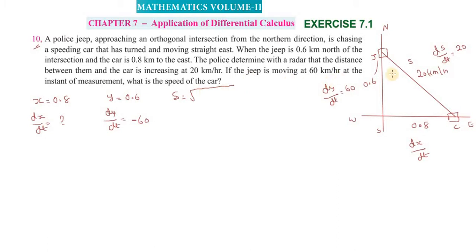s equals the square root of x squared plus y squared. x value is 0.8, so 0.64 plus y squared. y value 0.6 squared is 0.36. 0.64 plus 0.36 equals 1.